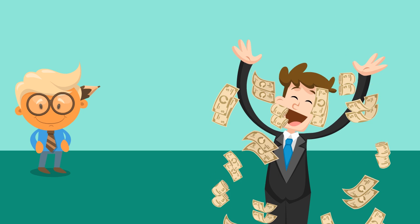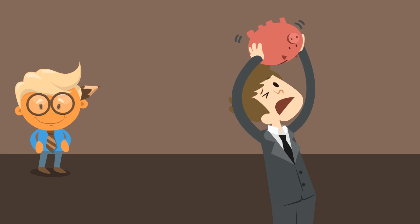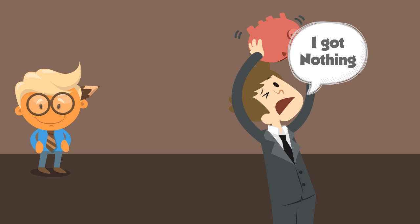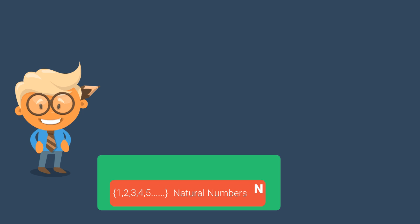You may be rich one day, but there are days when you are flat broke with no money left. To describe the notion of nothing, the number zero was discovered. When we add the number zero to the set of natural numbers, we get what is called the whole numbers, symbol W.